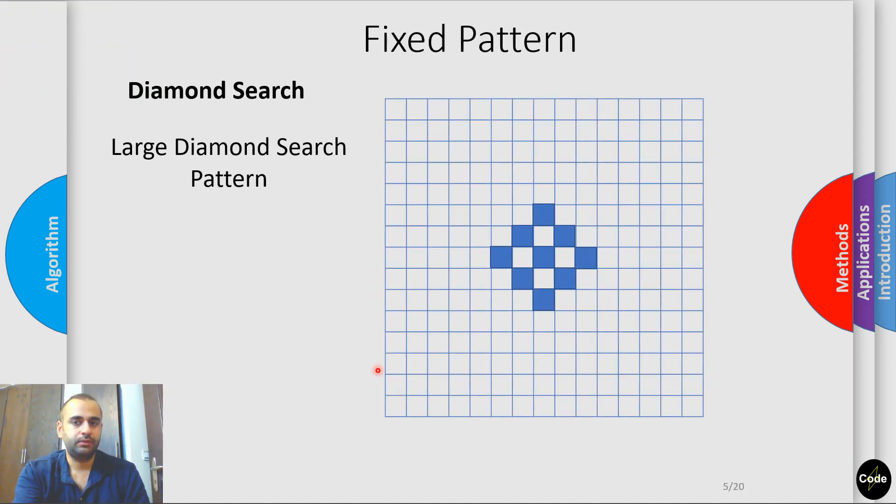To address this issue, researchers employ predefined patterns to search for the best block. They assume that by following a pattern, the error decreases monotonically. One popular pattern in this category is the diamond search.